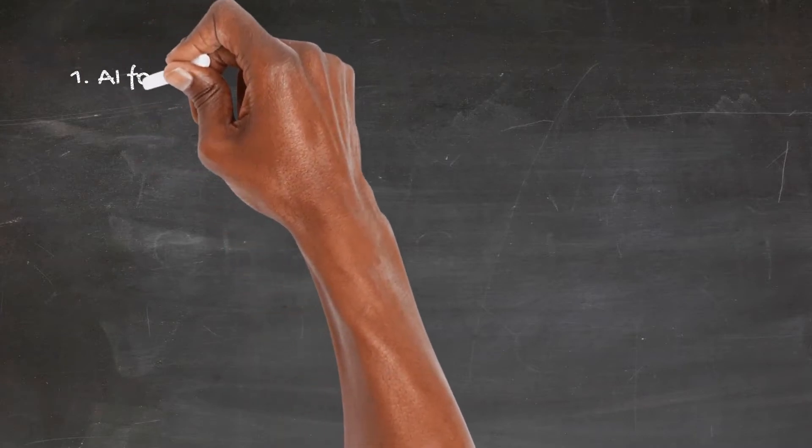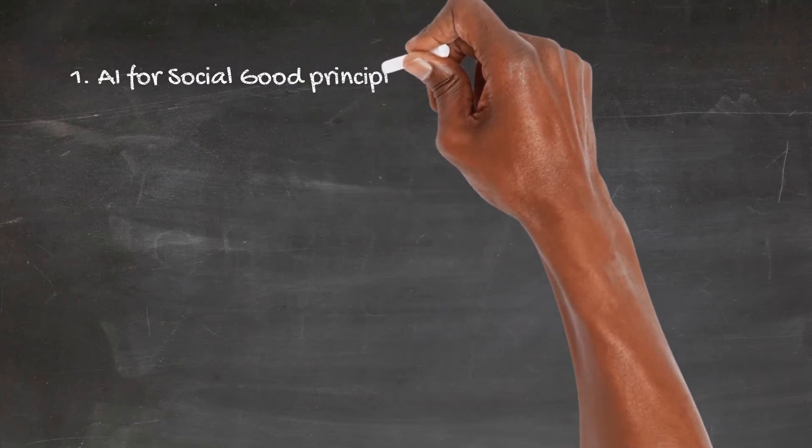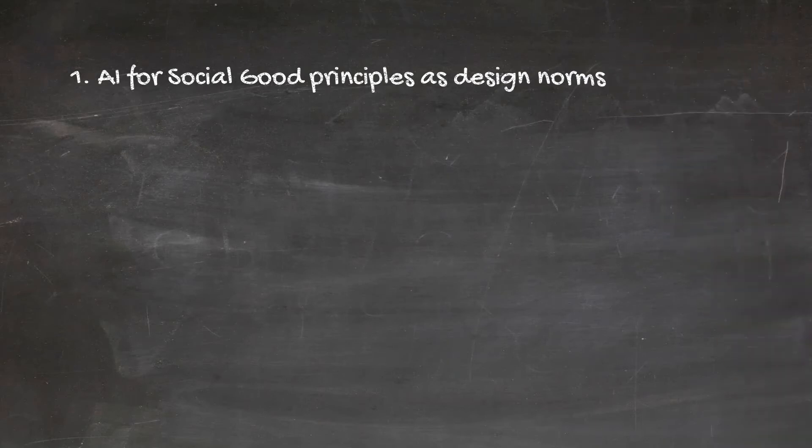We propose an adapted value-sensitive design approach. The adaptations we propose are threefold. First, integrating the AI for Social Good principles in value-sensitive design as design norms from which more specific design requirements can be derived.